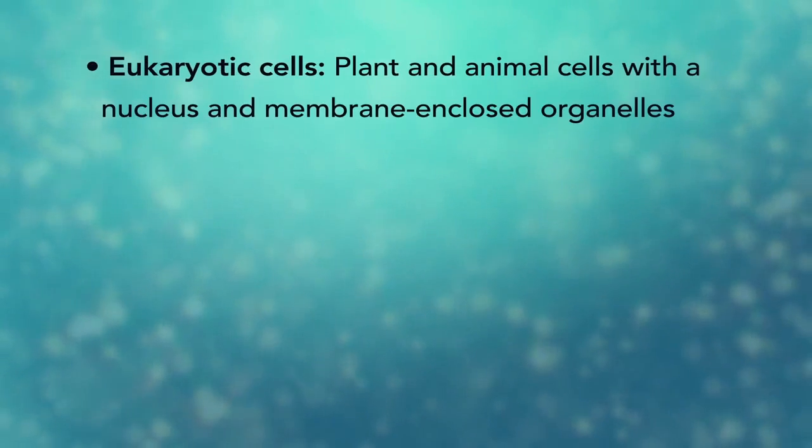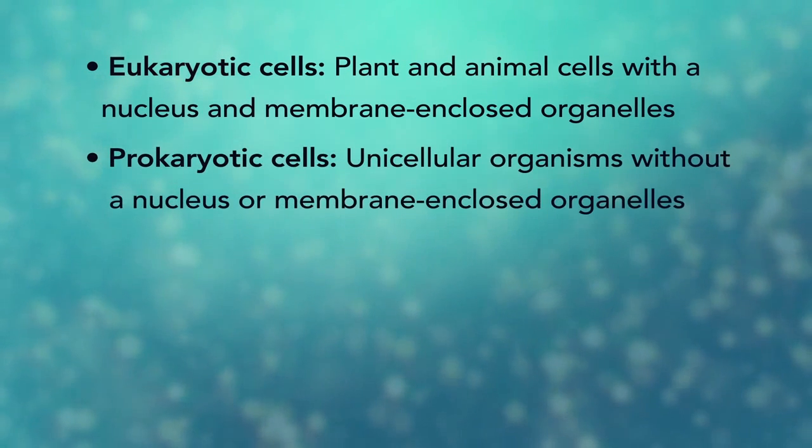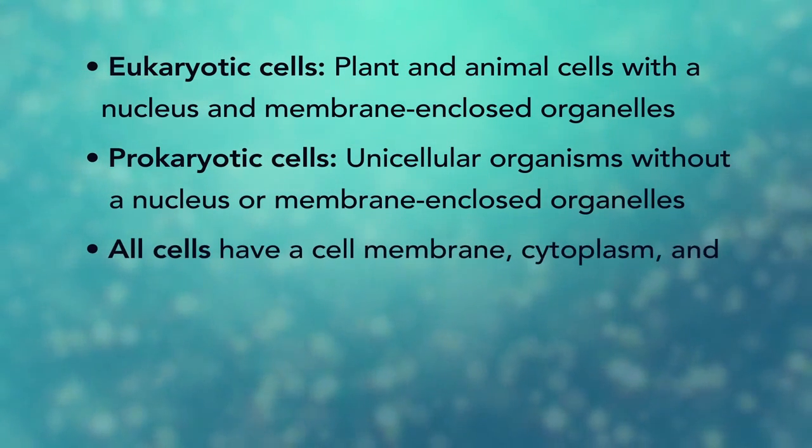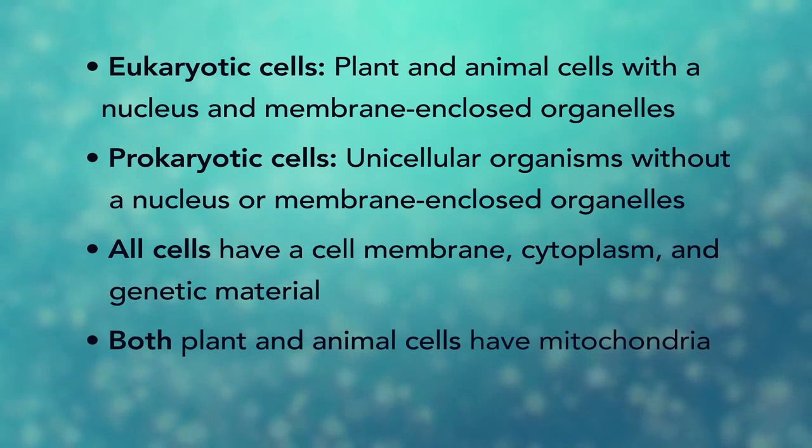In summary, remember, eukaryotic cells are plant and animal cells with a nucleus and membrane-enclosed organelles, while prokaryotic cells are unicellular organisms without these things. All cells have a cell membrane, cytoplasm, and genetic material. And even though only plant cells have chloroplasts, both plant and animal cells have mitochondria.